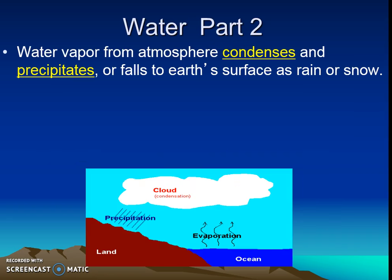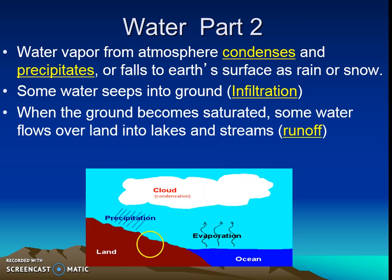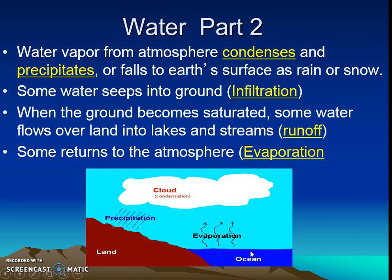The water cycle is categorized into the living and non-living parts. On the non-living side: water vapor from the atmosphere will condense — going from gas to liquid — and precipitate, or fall, to the earth's surface. Sometimes water will seep into the ground, which we call infiltration. When water moves fast across the land into a larger water body, that's called runoff. Water can also return to the atmosphere going from liquid to gas — that is evaporation.